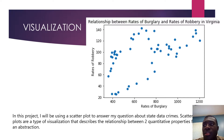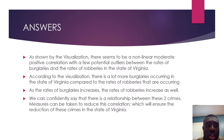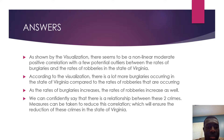I used a scatter plot to try to figure out an answer. A scatter plot is a type of visualization that describes the relationship between two quantitative properties from an abstraction, and I used the rates of burglary and rates of robbery as my two quantitative properties. The answer I found was that there was a non-linear, moderate positive correlation between these properties. There were a few outliers, but according to the visualization there are a lot more burglaries occurring overall, and as the rates of burglaries increased, the rates of robberies seemed to increase as well. So we can confidently say there is a relationship, and it could actually help reduce these crimes in Virginia.